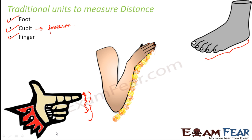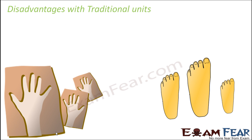So these were some traditional units where different parts of the body were used as a reference to measure distance. However, using traditional units has a lot of disadvantages associated with them.